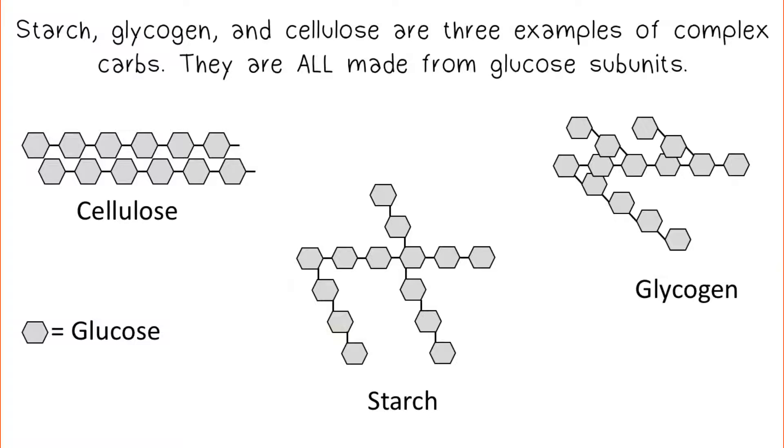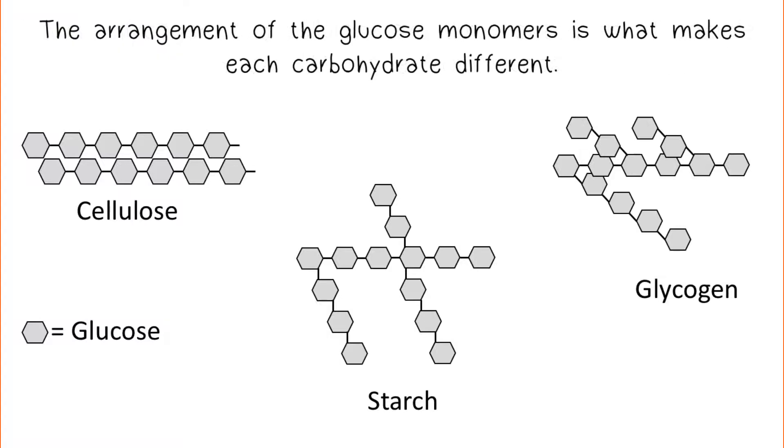Starch, glycogen, and cellulose are three examples of complex carbohydrates. They are all made from glucose subunits. The arrangement of the glucose monomers is what makes each carbohydrate different.